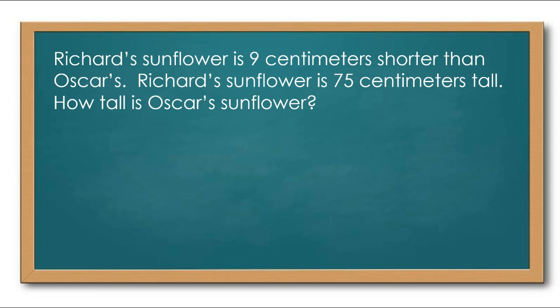All right here is our application problem. Remember with our application problems you can solve these however you feel comfortable using whatever strategy you feel comfortable with. So the first thing we need to do is read it. It says Richard's sunflower is 9 centimeters shorter than Oscar's. Richard's sunflower is 75 centimeters tall. How tall is Oscar's sunflower?